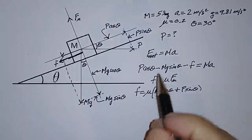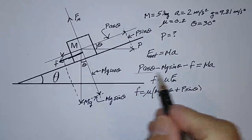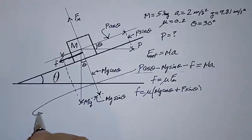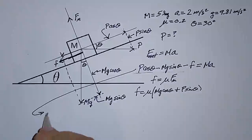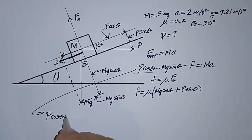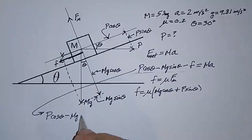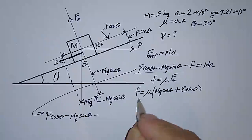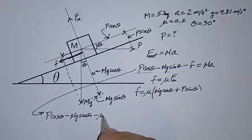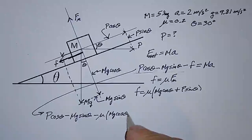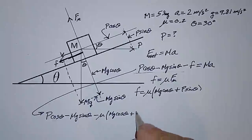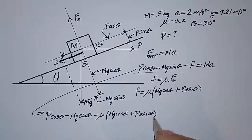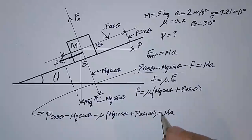So we can write F net equals M A, this equation right here. I'm going to write that as P cosine theta, minus M G sine theta, minus F, which is mu times M G cosine theta, plus P sine theta, is equal to M A.